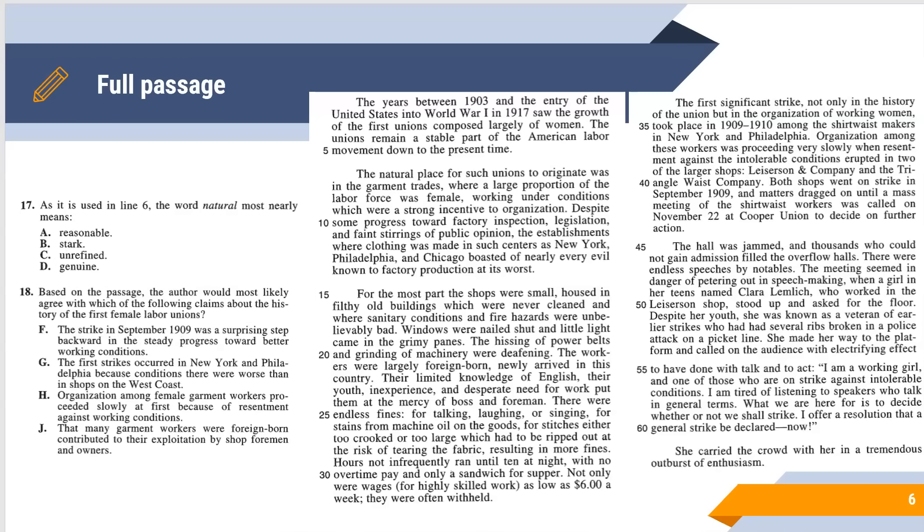Take a moment, pause the video, and see if you can find answers to 17 and 18 now. Number 17 says, as it is used in line 6, the word natural most nearly means, and of course the answer is A: reasonable. It makes sense that unions would emerge in garment trades because conditions there are ripe for labor organizing, so natural and reasonable are going to be sort of the best synonyms here.